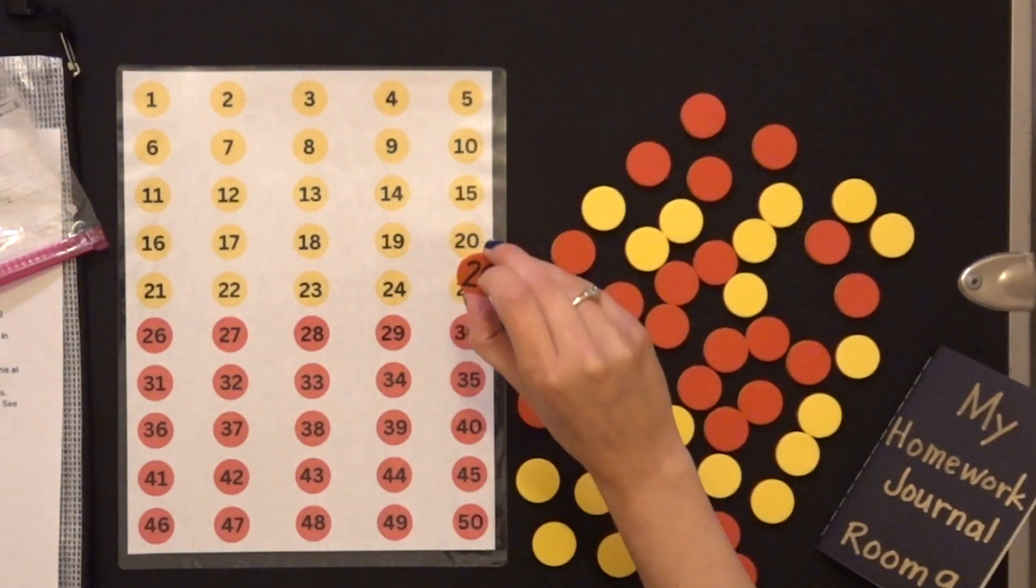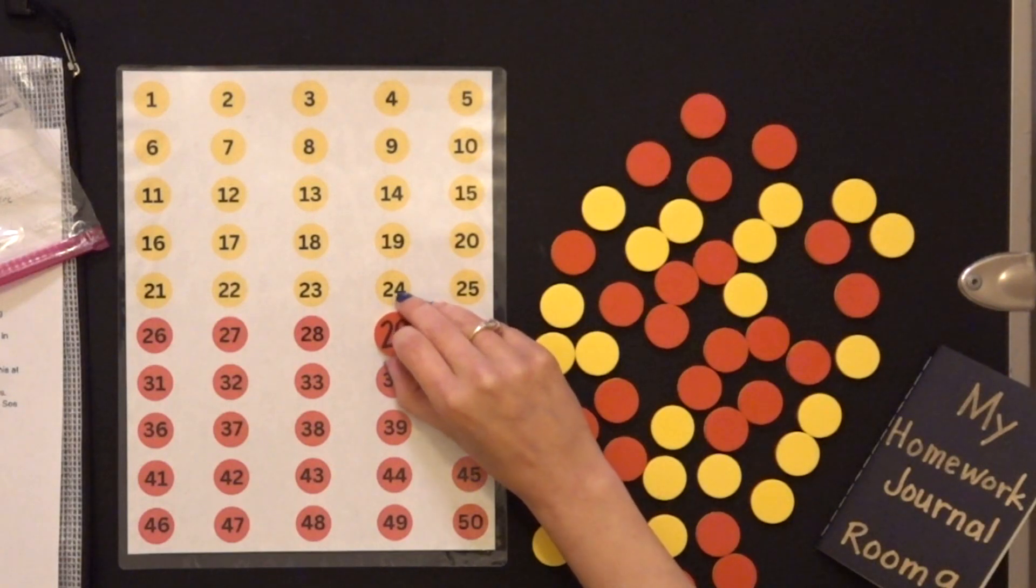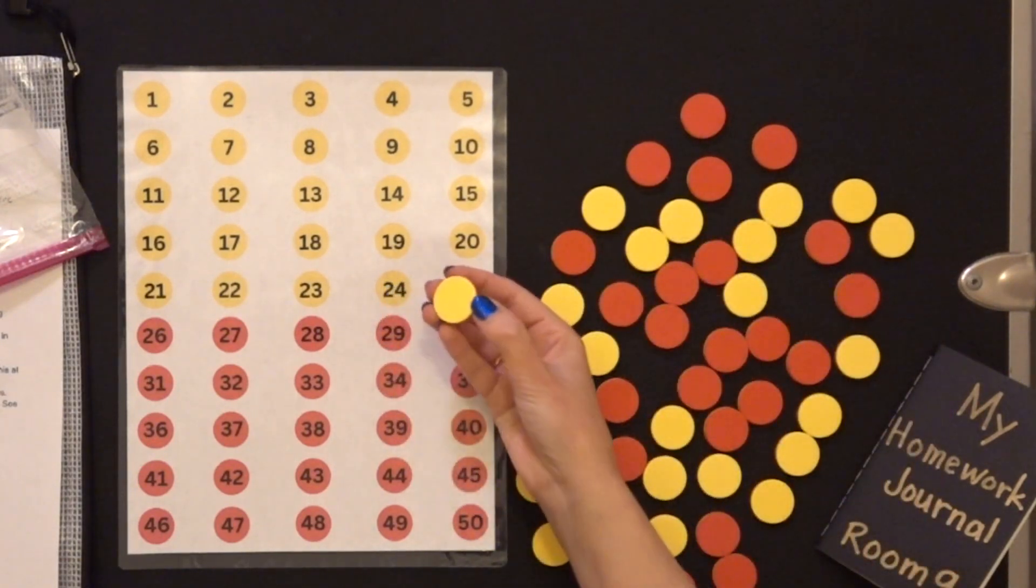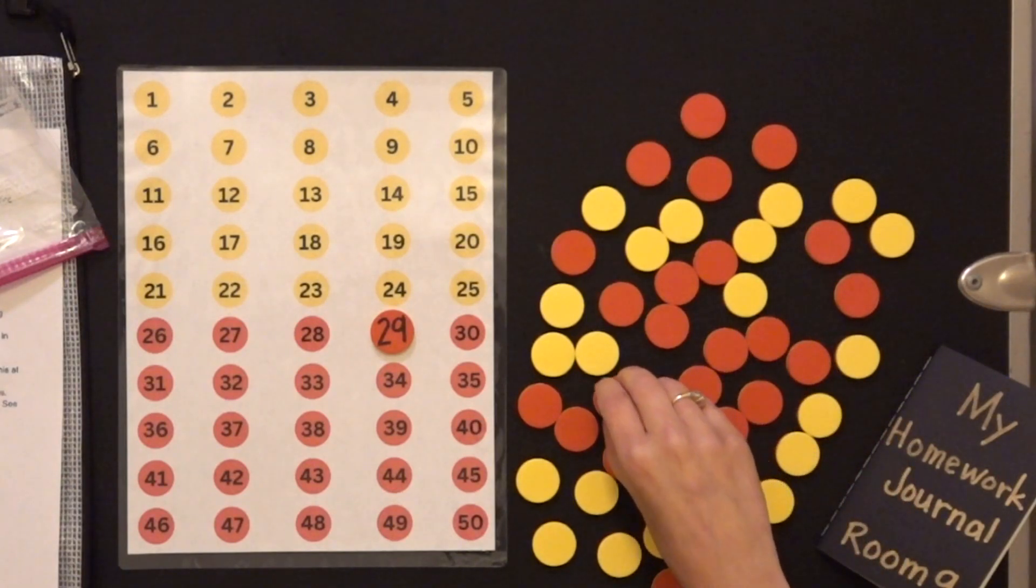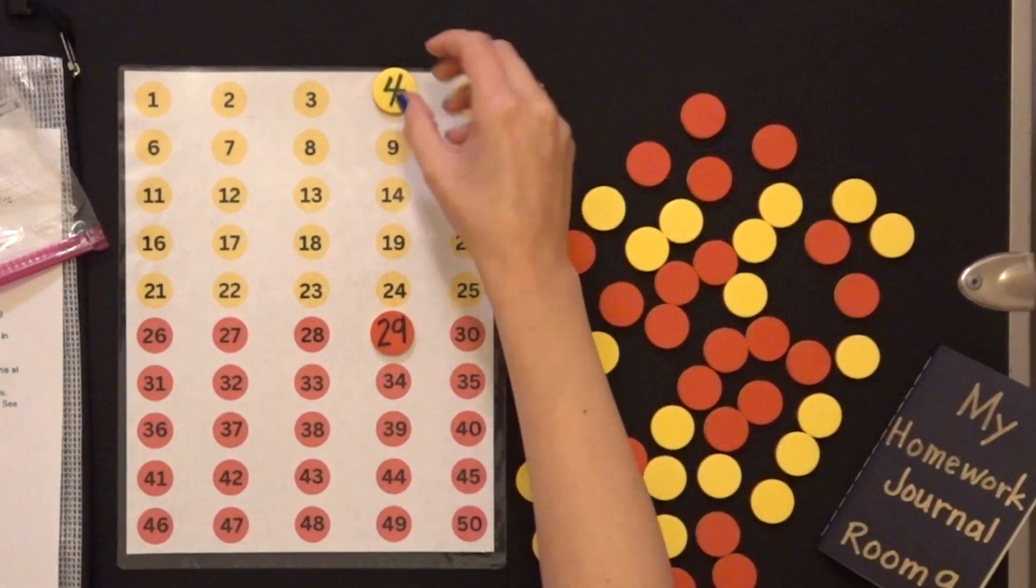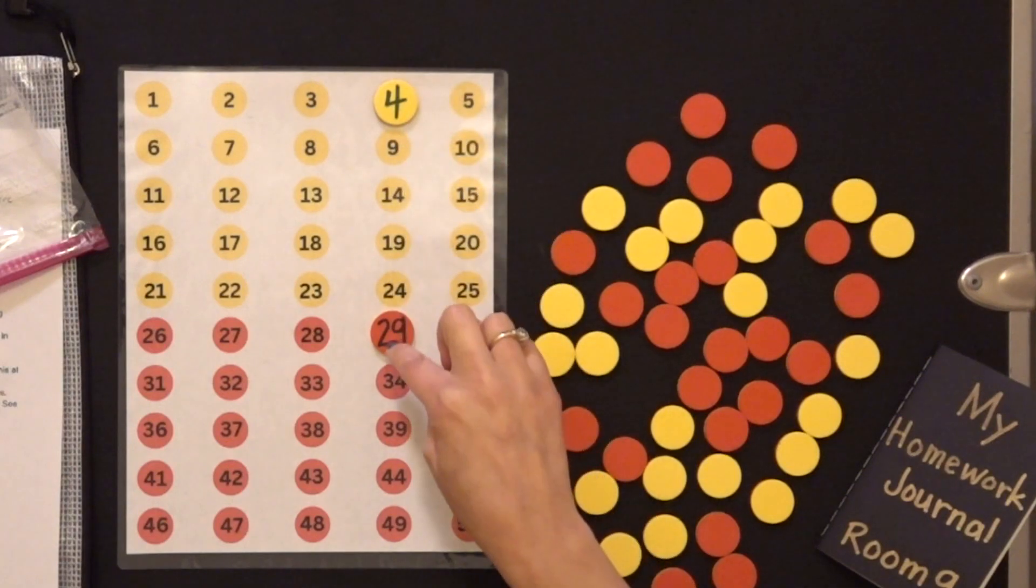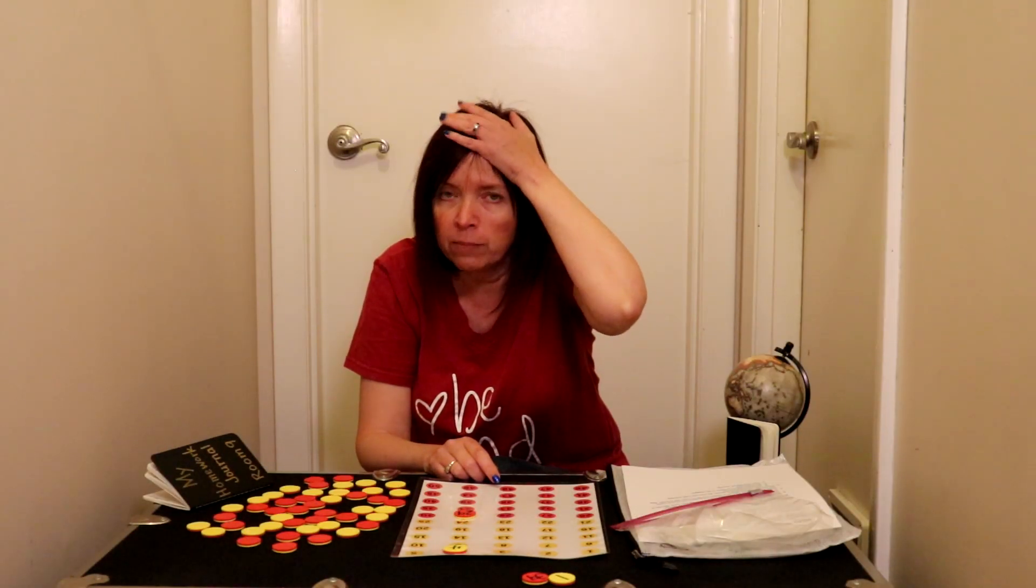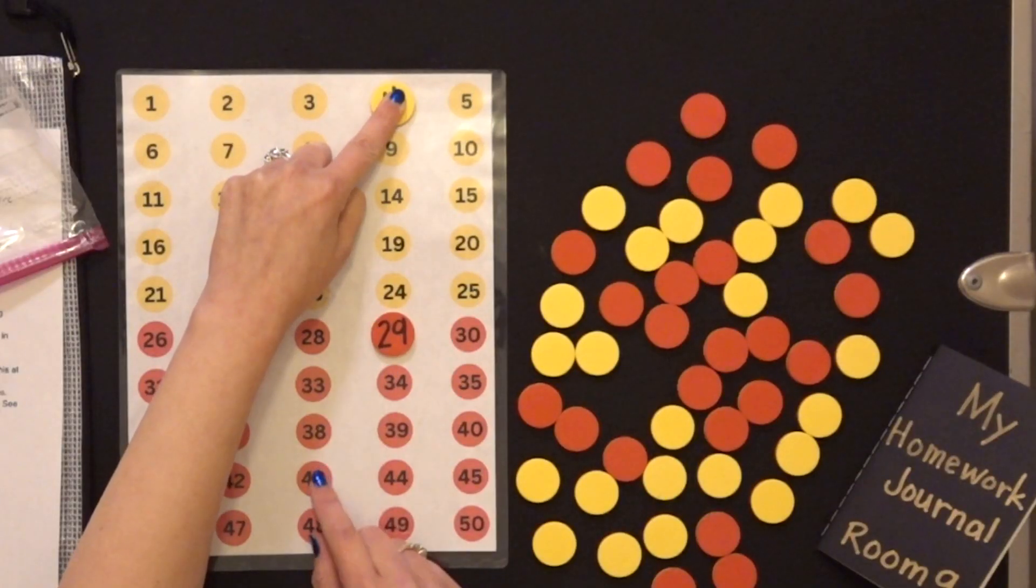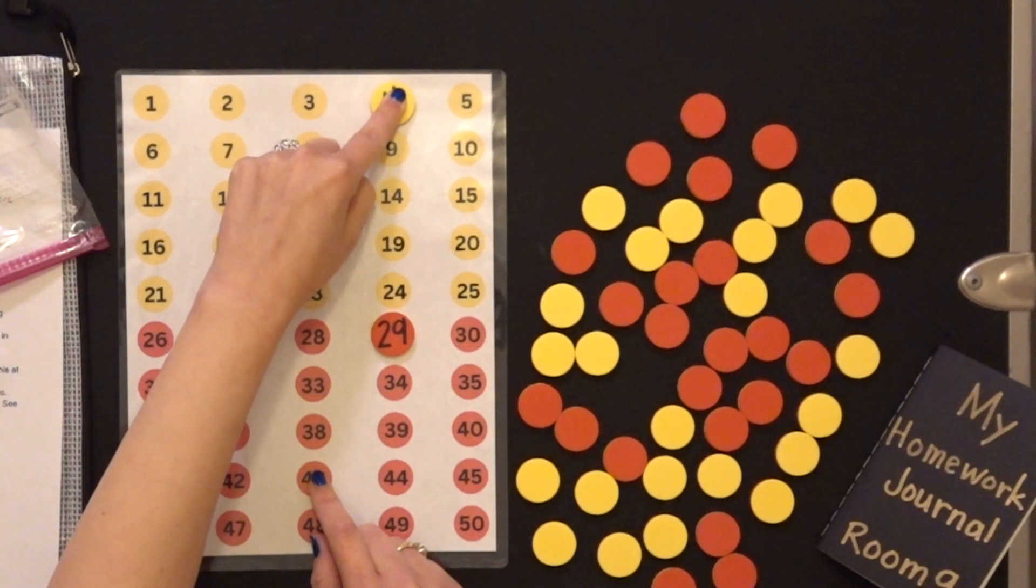So I have the number 29, and that was the yellow one that I chose. So now I need to choose a red one. Four. So now I'm going to go from four to 29. So I'm going to get four stuck in my head. Remember, we don't say that one when we count on, and we're going to count on till we get to 29. Are you ready?